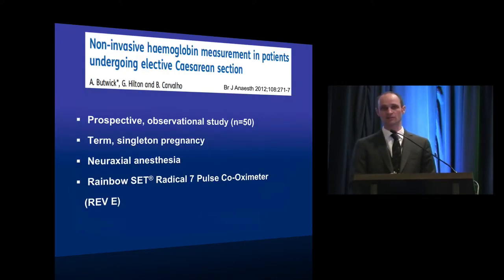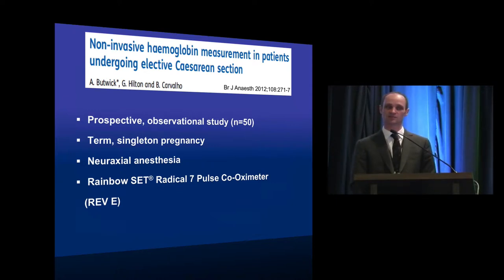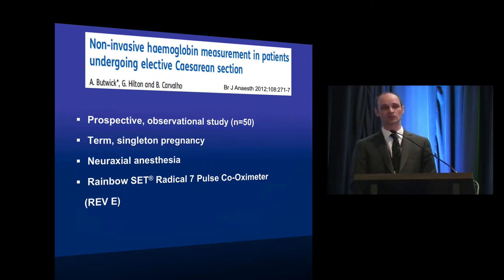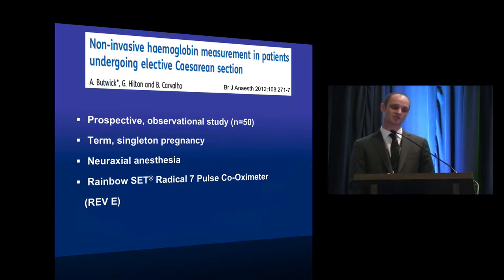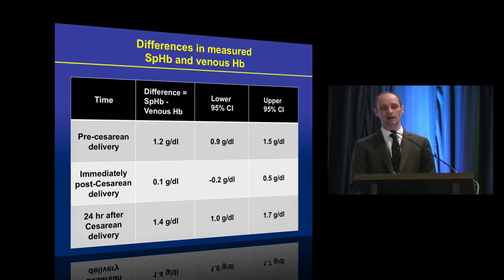Back in 2012, we published a study looking at device performance in a homogeneous cohort: healthy patients undergoing elective cesarean section with singleton pregnancies under spinal or combined spinal-epidural anesthesia. We compared device hemoglobin values to lab values at three time points — before C-section, immediately after in recovery, and 24 hours after delivery. The device appeared to overestimate the lab hemoglobin concentration both before C-section and at 24 hours, by at least one gram per deciliter, with considerable variability raising questions about precision.